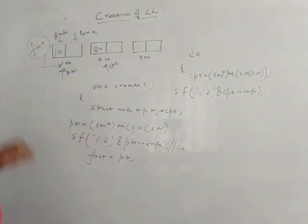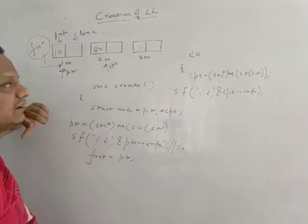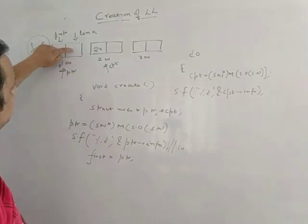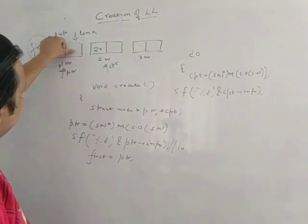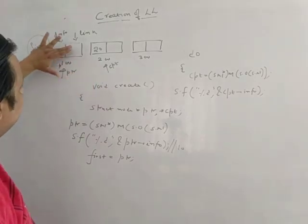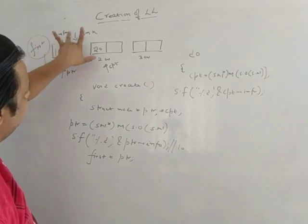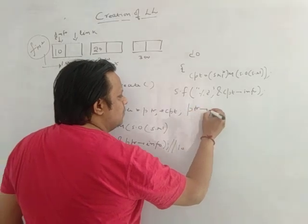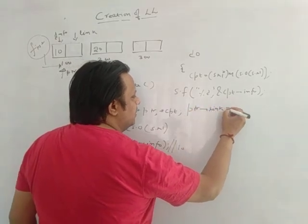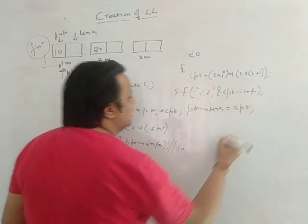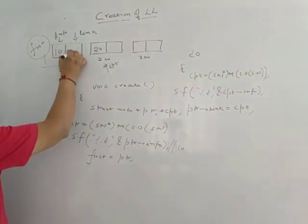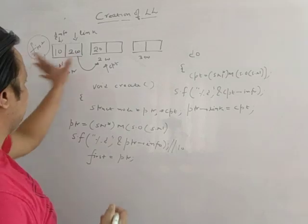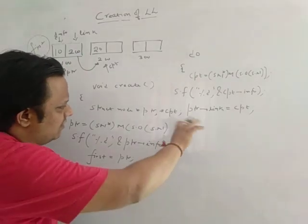Now, if you want to make a linked list, the link part of the first node should contain the address of the second node — that means address 200 should go here. This is nothing but the link part of ptr. So I write ptr->link = cpt. When I write ptr->link = cpt, address 200 gets inserted and the two nodes are connected.